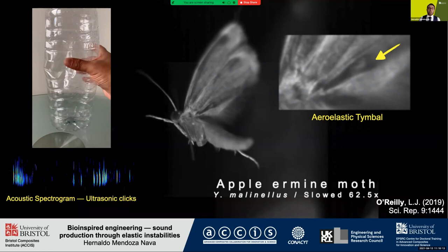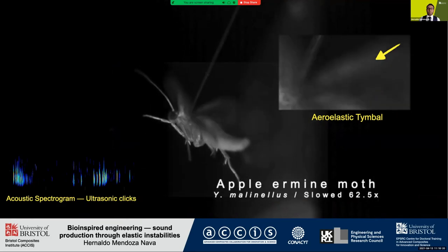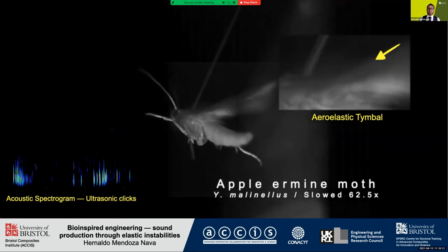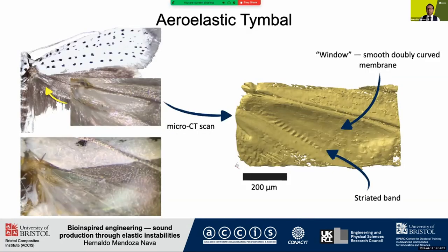Airmine moths produce bursts of ultrasonic clicking sounds to defend from predatory bats. Take a look at the slow motion video. These sounds are produced when their aeroelastic timbales buckle. Aeroelastic timbales are striated regions of the wing membrane located at the base of the posterior wings. These structures are composed of two parts: a striated band and a smooth membrane which is known as a window.